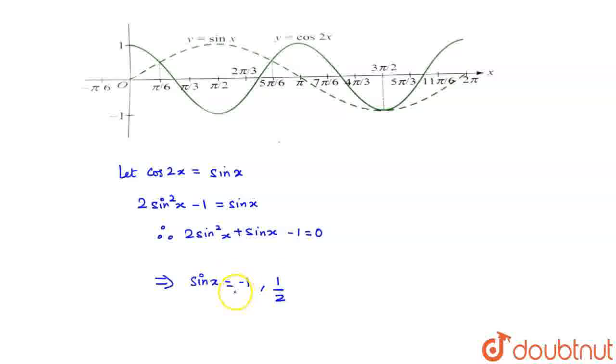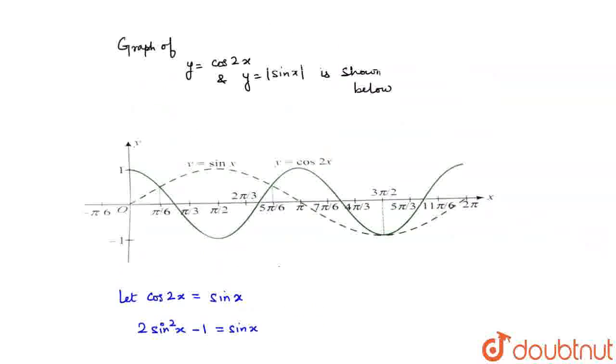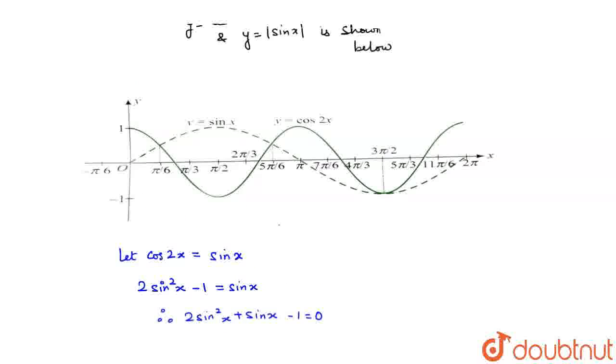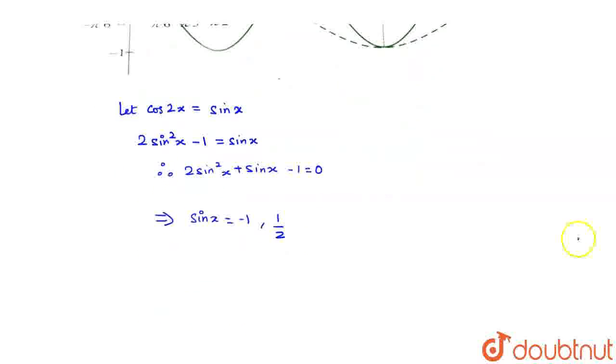Sin x cannot be minus 1 because there is a modulus sign, so it can only take positive values. This rules out minus 1, leaving only one half.